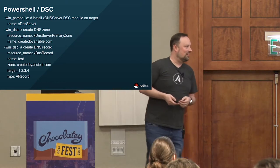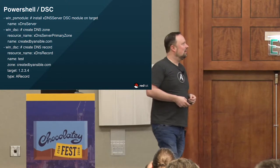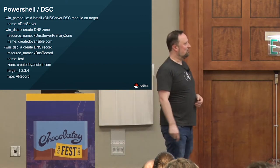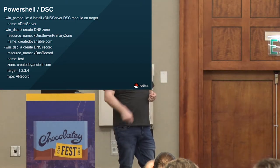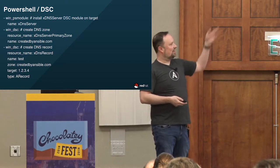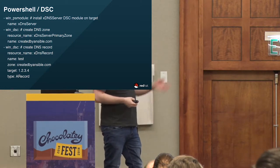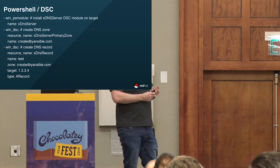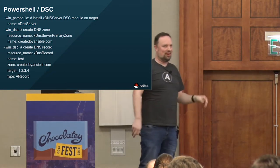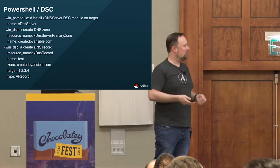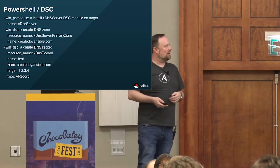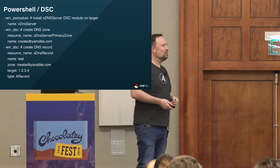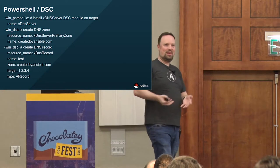PowerShell also gives us access to the entire DSC universe via the win_dsc module in Ansible. If you're familiar with DSC, we can call any DSC resource transparently — it looks just like a normal Ansible task. The DSC resource has to be installed on the remote target, unlike our modules which we push over from the controller. Here are three Ansible tasks that stand up a DNS server, create a zone, and create a record. We use the win_psmodule module to install the xDnsServer DSC module on the target, then use win_dsc to drive it and pass the desired state.